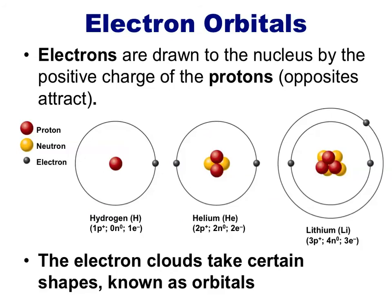To review, electrons have a negative charge, and they are drawn to an atom by the oppositely charged protons that are found in the nucleus of that atom. These electrons occupy spaces known as orbitals, and orbitals are found in a distinct pattern, since each electron tries to get as close to the nucleus as it can without bumping into other electrons.